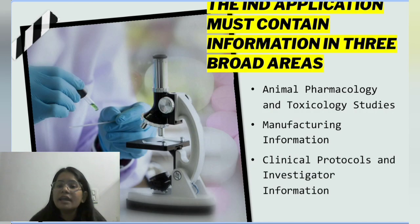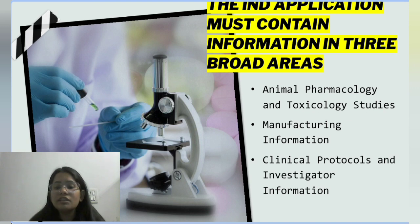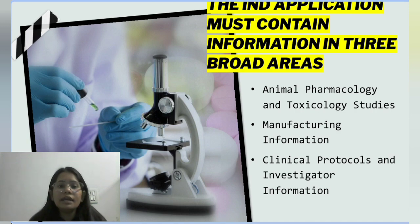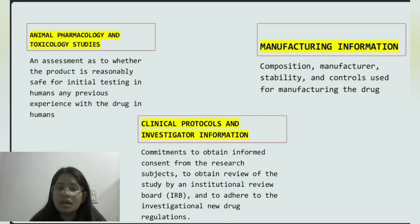The IND application must contain information in three broad areas: animal pharmacology and toxicology studies, manufacturing information, and clinical protocols and investigator information. In animal pharmacology and toxicology studies, this includes an assessment as to whether the product is reasonably safe for initial testing in humans, and any previous experience with the drug in humans.